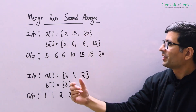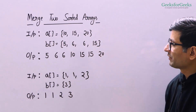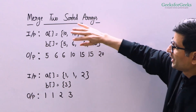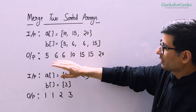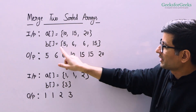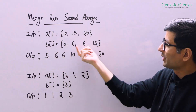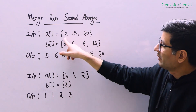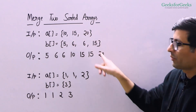The first array is 10, 15, 20. The second array is 5, 6, 6, 15. We need to print all these in sorted order: the smallest element 5, then 6 two times, then 10, then 15 two times, then 20.